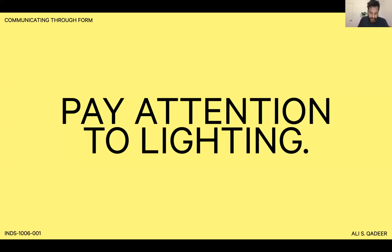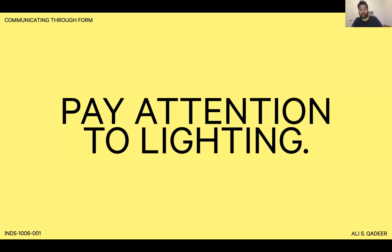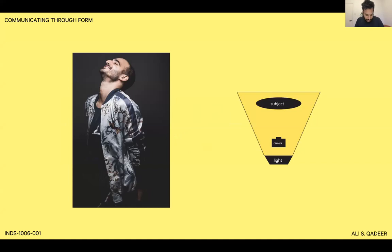Pay attention to lighting. As photographers, we have the ability to change where our light source is in relation to our subject, which helps us to clarify forms or emphasize certain details over others. Front lighting is the most straightforward to shoot for, creating a flat and even look. With the light directly in front, the shadows fall behind the object, so cast shadows can easily be used to describe the form.